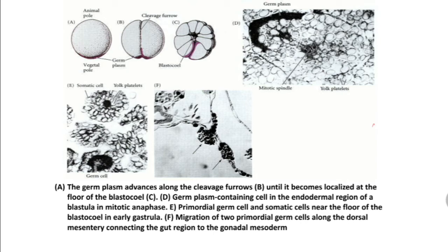These images show the whole process of germplasm migration in amphibians. In the zygote, the germplasm is associated towards the vegetal pole. During cleavage it migrates upward due to yolk in the cytoplasm and ultimately becomes associated with endodermal cells at the floor of the blastocoele. One image shows a somatic cell and a germ cell near the floor of the blastocoele in early gastrula, and the last image shows two primordial germ cells along the dorsal mesentery connecting the gut to the gonadal mesoderm.